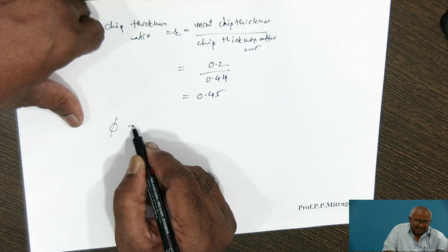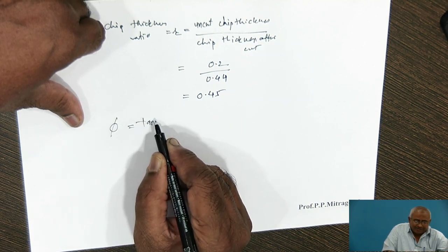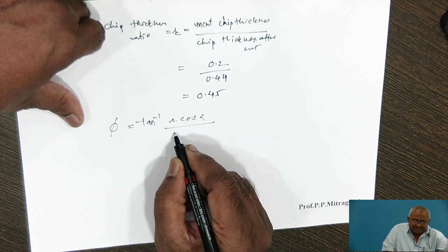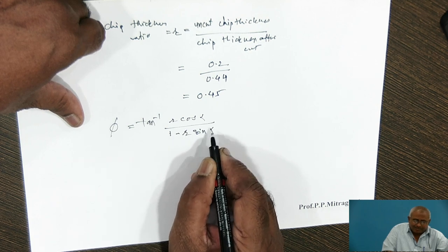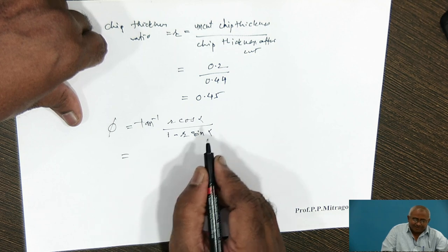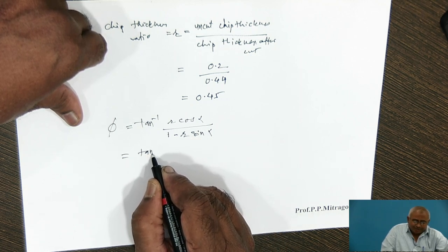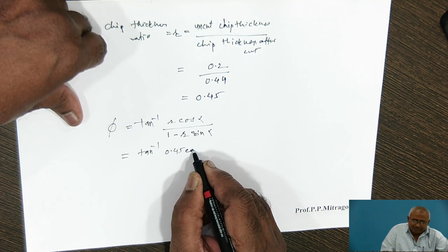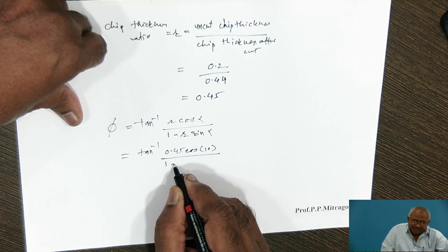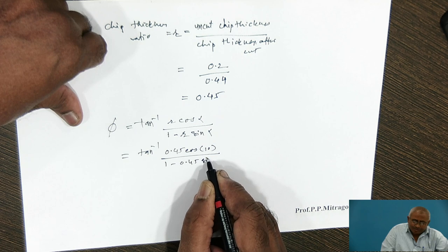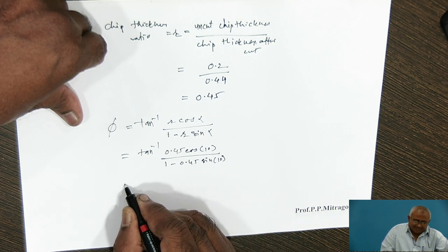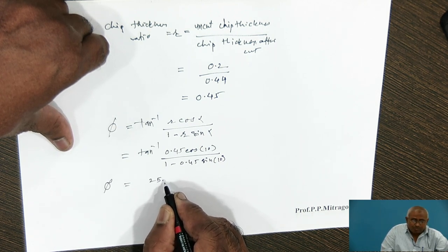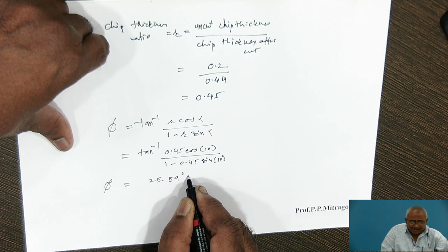Now that we know R, we can calculate the shear angle phi using the formula: phi = tan inverse of (R cos alpha) divided by (1 minus R sin alpha), where alpha is the rake angle. Substituting the values: phi = tan inverse of (0.45 × cos 10°) divided by (1 minus 0.45 × sin 10°). Calculating with a calculator, the value of phi comes out to be 25.89 degrees.